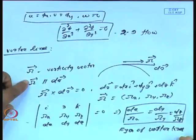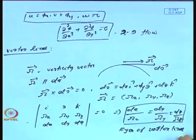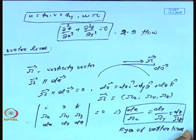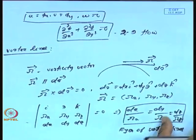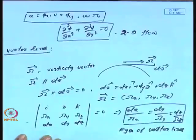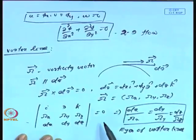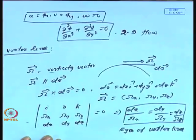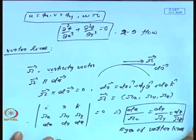When the flow is irrotational, these vortex lines will not exist, because ω̄ = 0 for irrotational flow — the vorticity vector is zero. So in that case there will be no vortex lines.